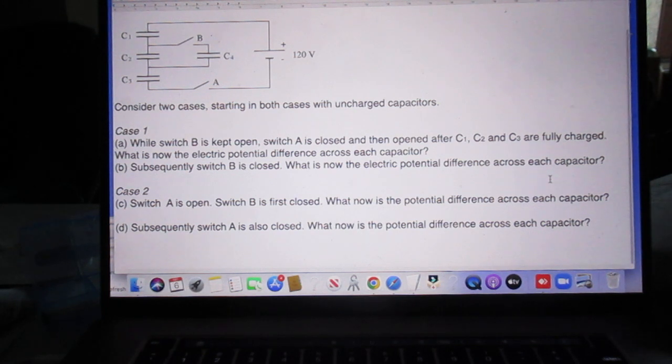And the last question. Subsequently, switch A is also closed. So now B and A are both closed. What now is the electric potential difference across each capacitor?